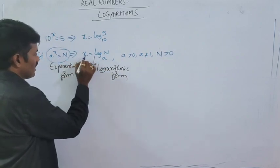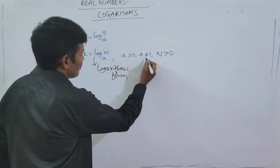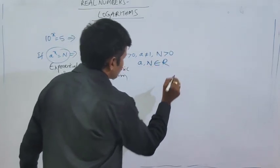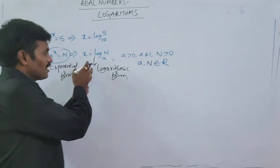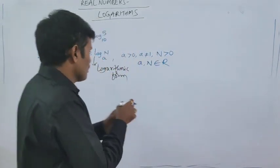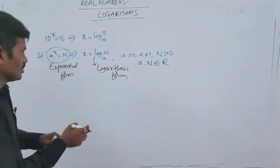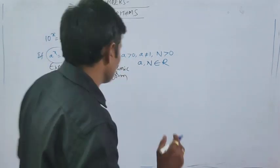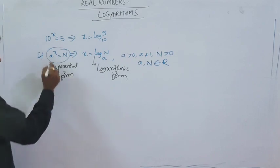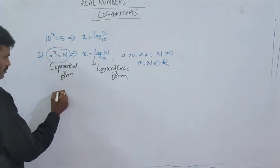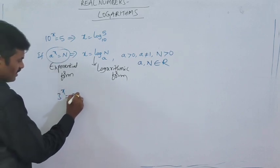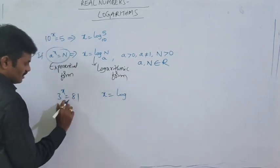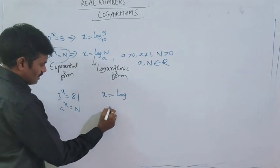In the definition: a to the power x equals n, with base a greater than zero, a not equal to 1, and n greater than 0. Here a and n are real numbers, meaning logarithms are also a part of real numbers — this is another category. These fall under irrational numbers. For example, if 3 to the power x is equal to 81, then writing it in logarithmic form gives x is equal to log 81 to the base 3.